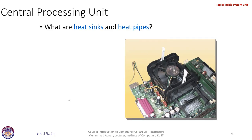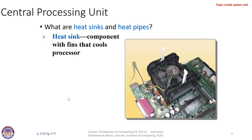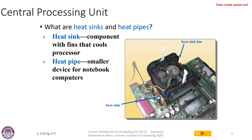If you open the casing or the system unit, you will see an important component called the heat sink or heat pipes. The heat sink has a fan and absorbs heat from the processor, keeping a consistent temperature so the processor does not malfunction or destroy itself. High temperature can cause serious problems. Heat sink is a component with fins that cools the processor. Heat pipes are smaller devices used in notebook computers, just as heat sinks are used in desktop computers.